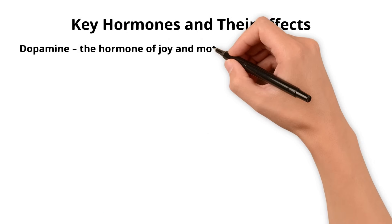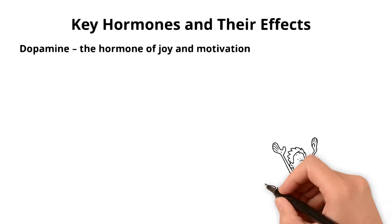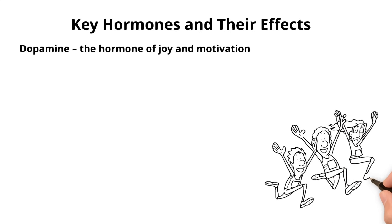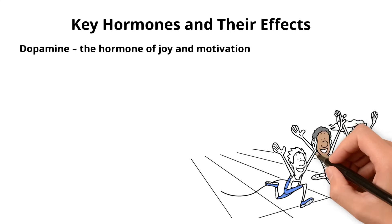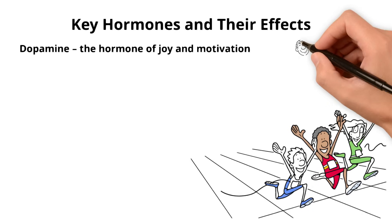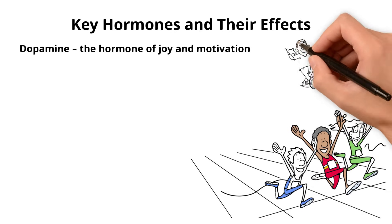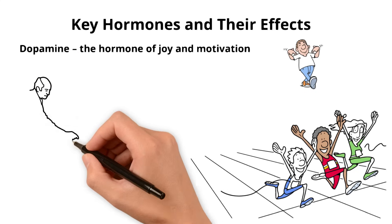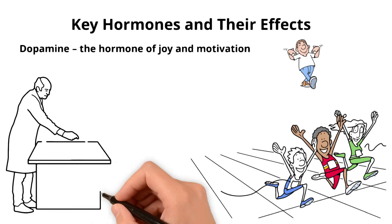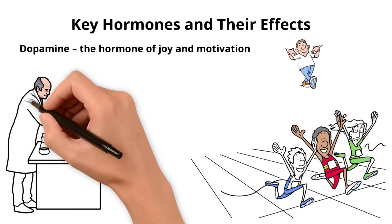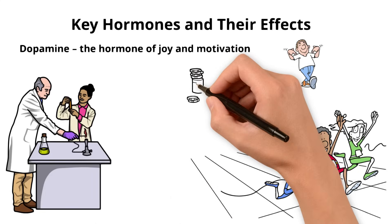Dopamine, the Hormone of Joy and Motivation. When you complete a challenging task or achieve a goal, your brain rewards you with a dose of dopamine. This makes you feel proud and eager to move forward. A study conducted by researchers at the University of Michigan found that high levels of dopamine enhance our motivation to achieve goals.